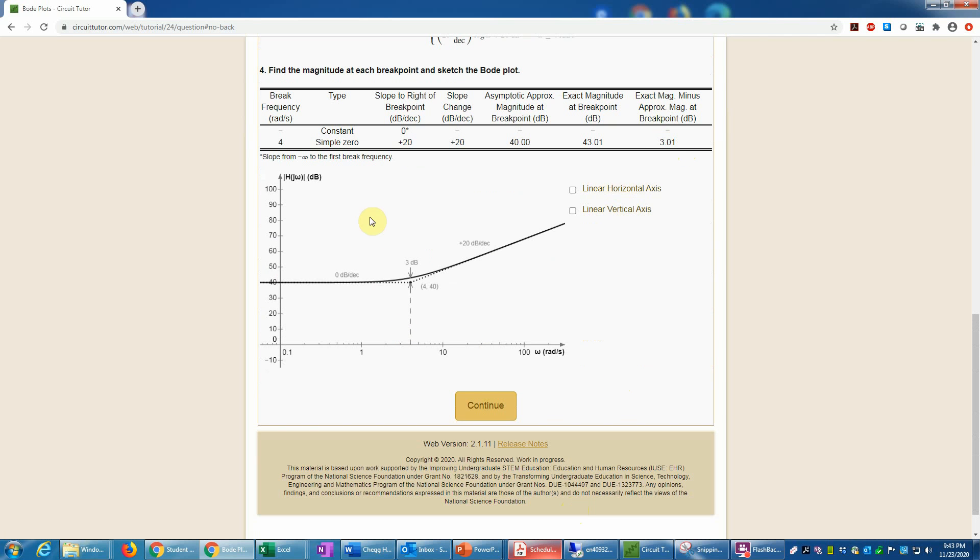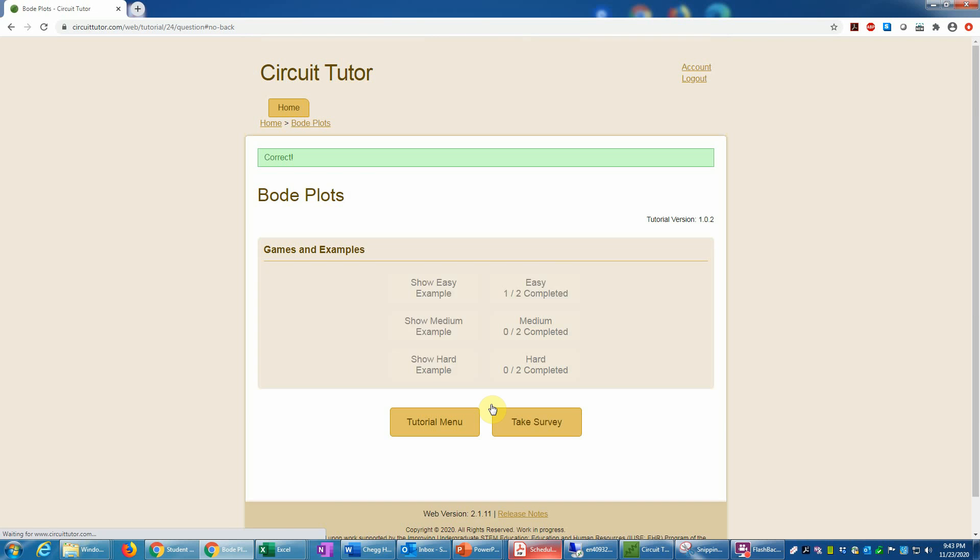Now we have the exact curve, and basically we're finished. If you wish, you can display this on a linear horizontal axis to see how it looks there, or linear vertical axis, or both at the same time if you wish. But that's not required, and that basically completes the example.